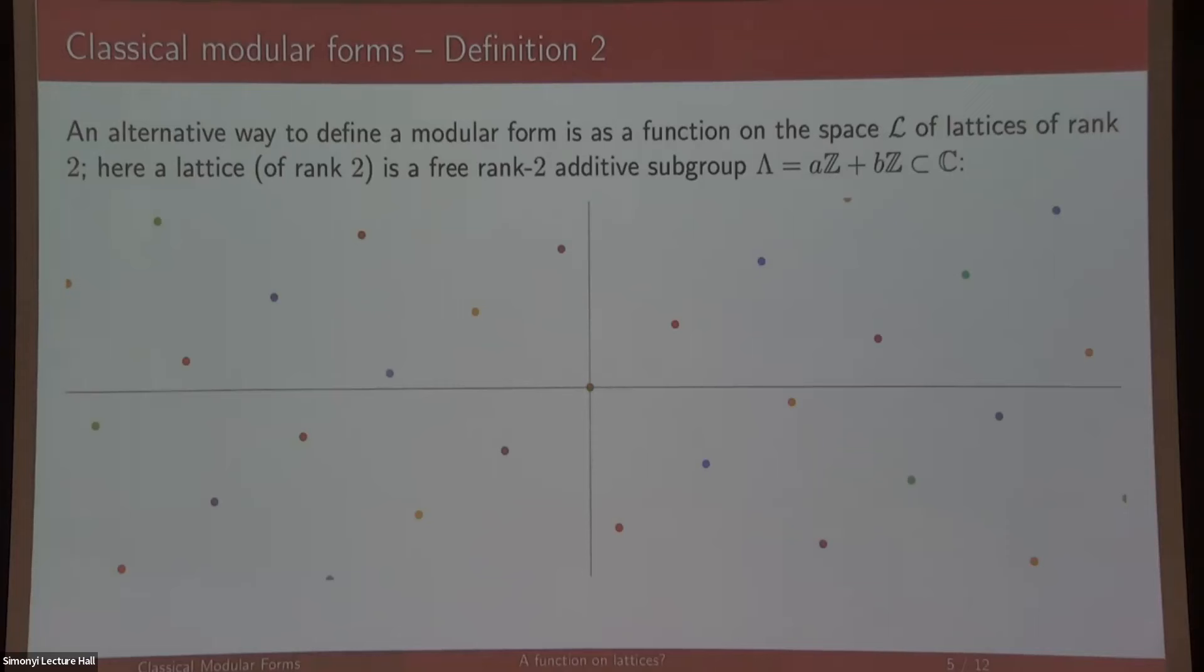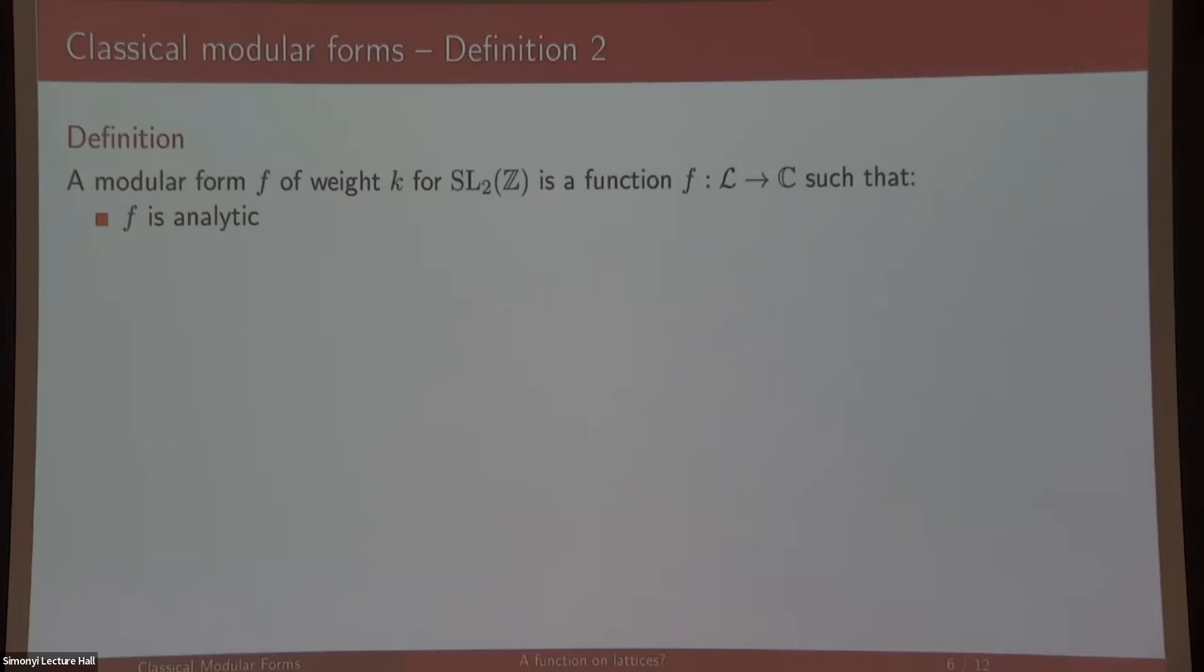The definition when phrasing them as functions of lattices is as follows. First of all, your f has to be analytic. There's a question mark there because you have to define what you mean for a function on the space of lattices to be analytic. You just need to give the space of lattices some analytic structure. Then the other condition with the factor of automorphy gets written more simply as saying that your f is homogeneous of degree negative k.